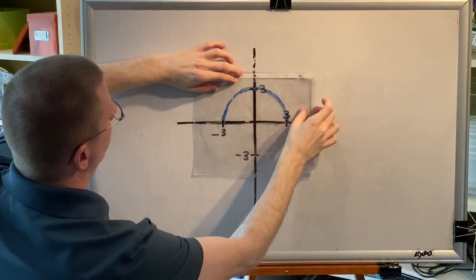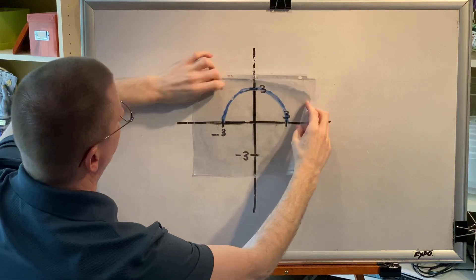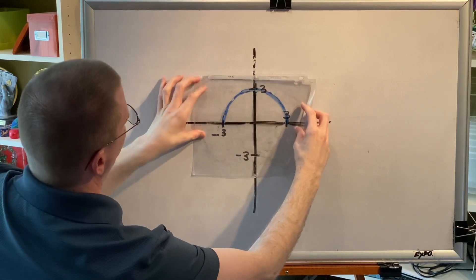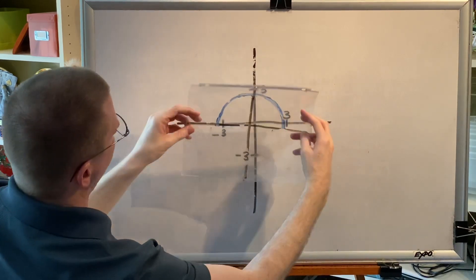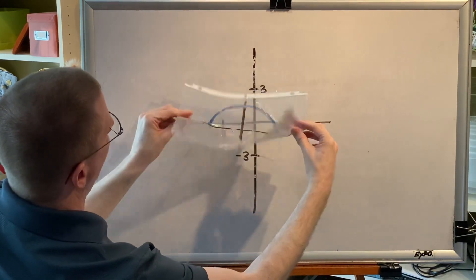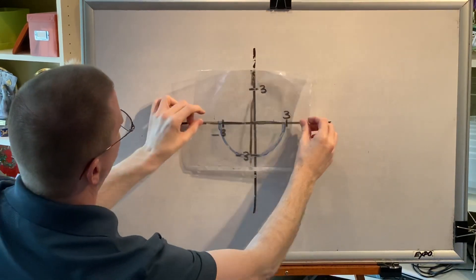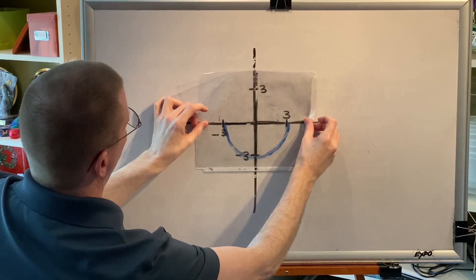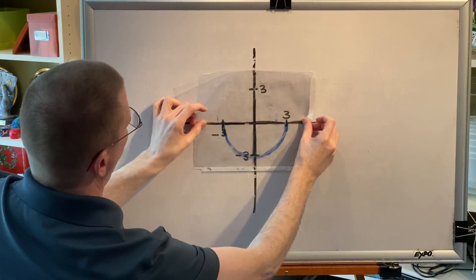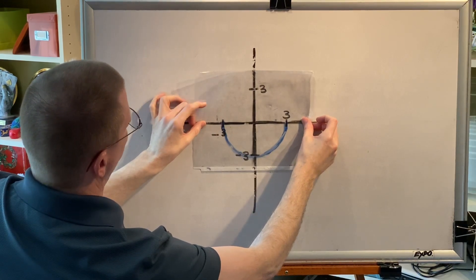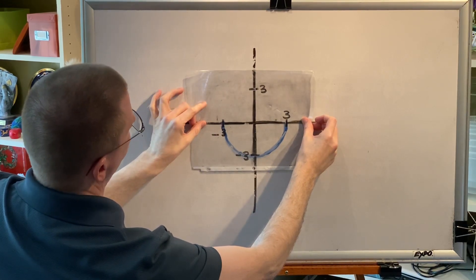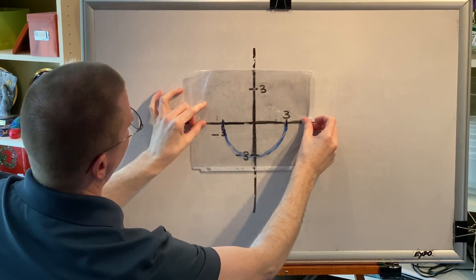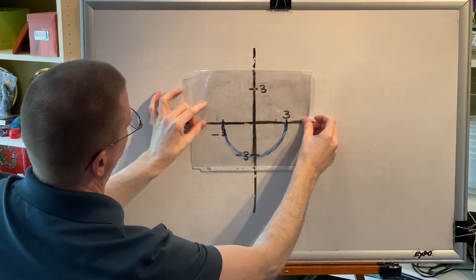When we test for x-axis symmetry and spin it around the x-axis, the half-circle moves to the bottom, which is different. The before and after are different, so there is no x-axis symmetry.